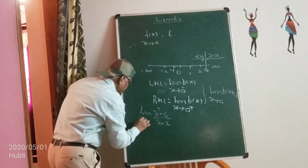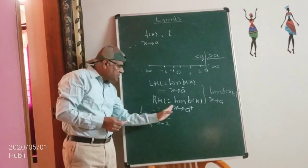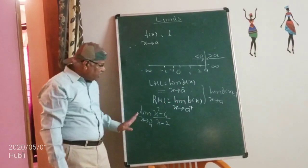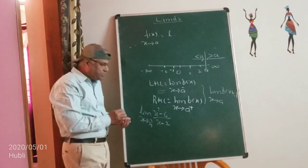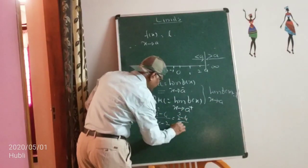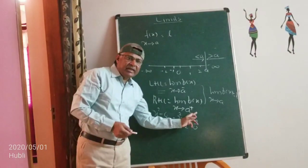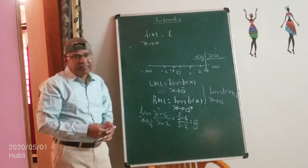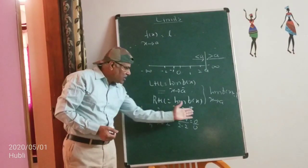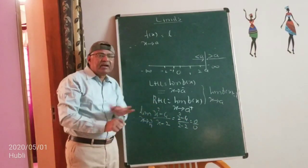For example: limit of (x² − 4)/(x − 2) as x→2. Here only one function is defined, so less than 2 or greater than 2 does not arise. Replacing x by 2 gives (4 − 4)/(2 − 2) = 0/0. That is 0 divided by 0, which is called an indeterminate form — meaningless or cannot be determined.